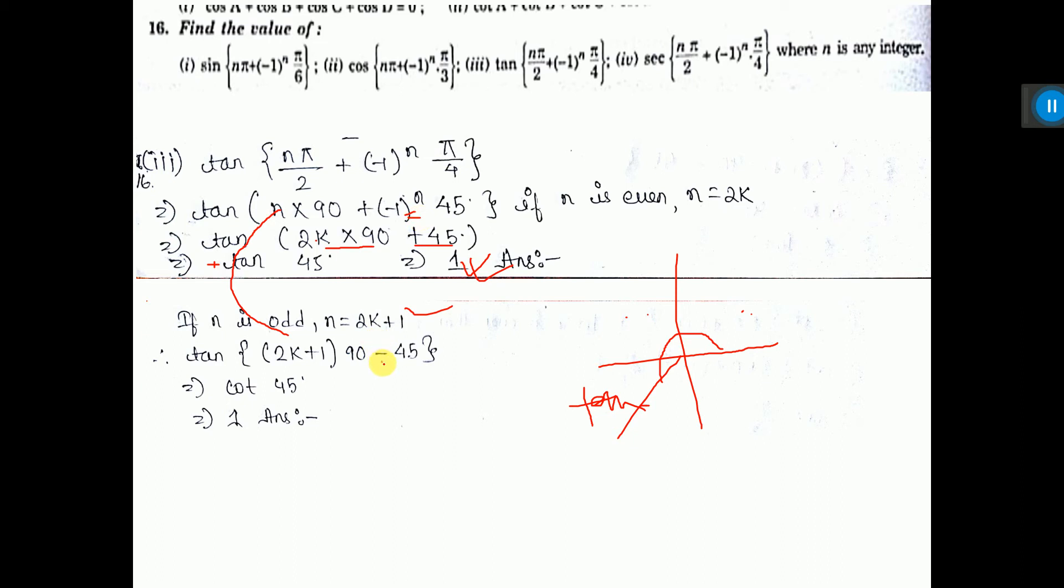So we are getting 2k plus 1 times 90 minus 45. So one more step you do here. Tan 2k into 90 degrees. Here you multiply 90 inside, plus 90 degrees minus 45.